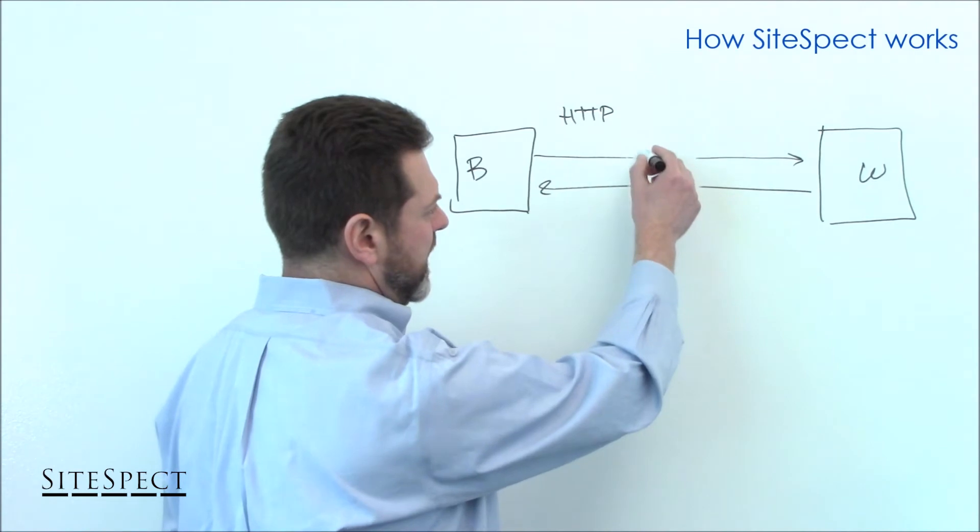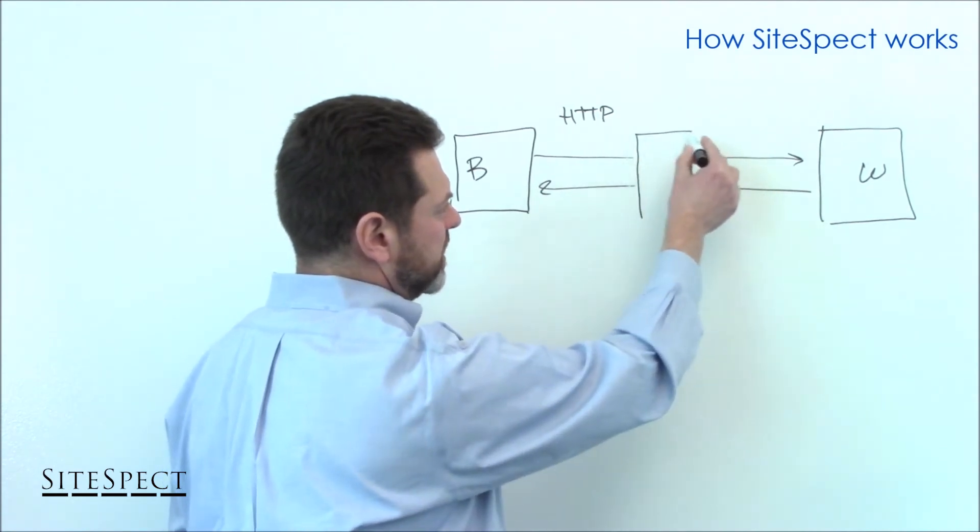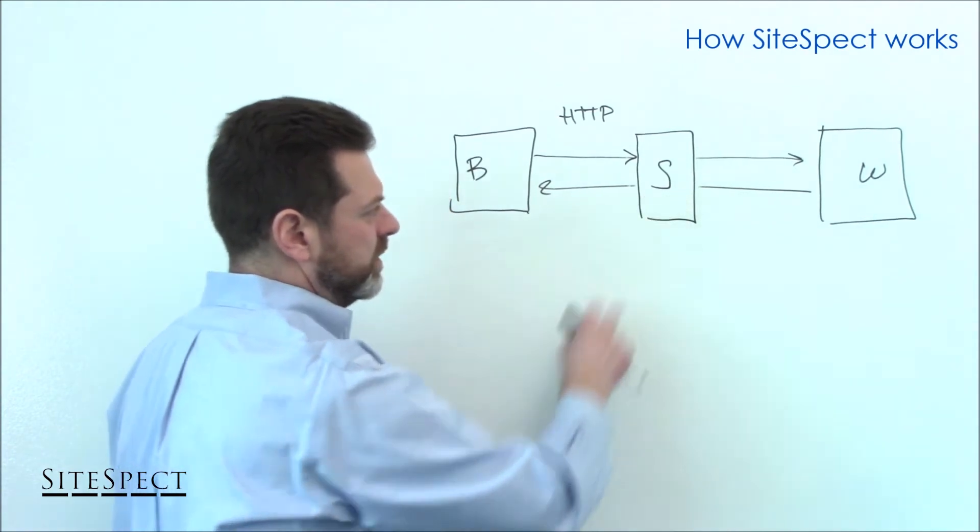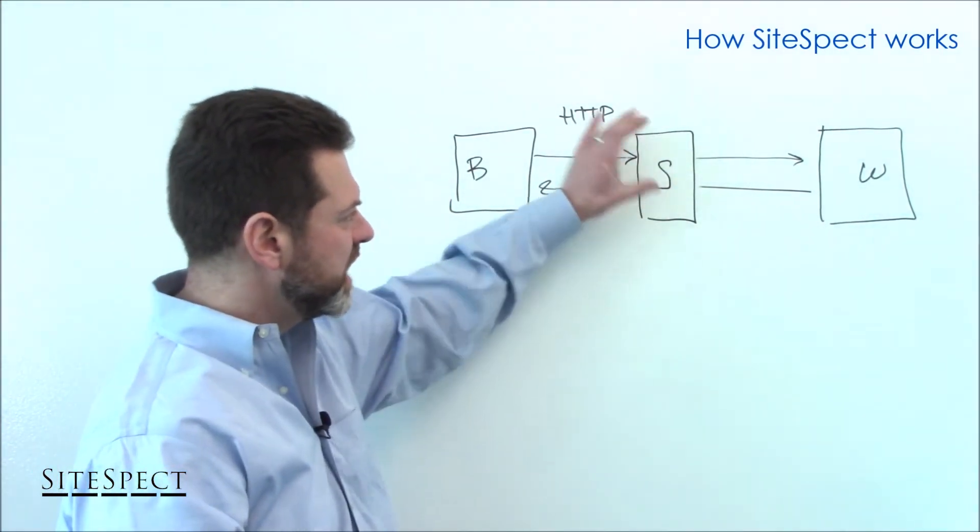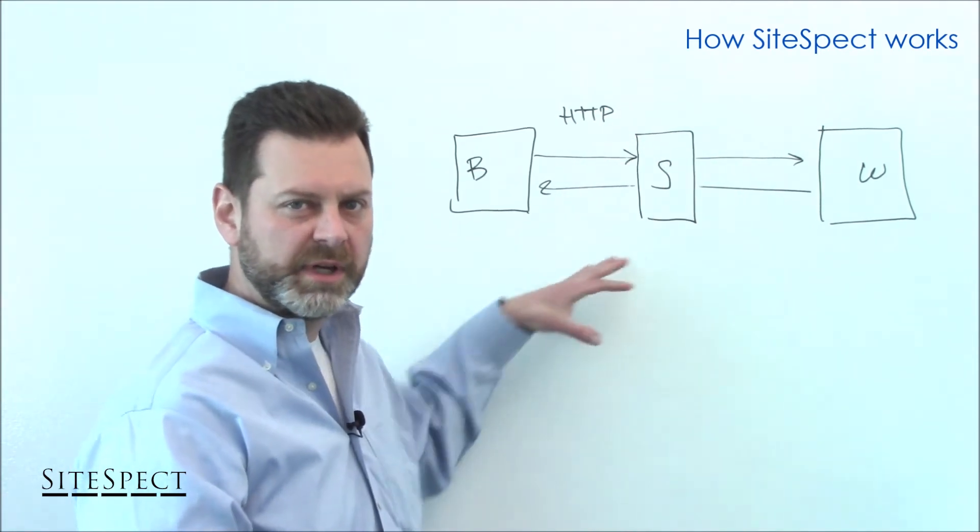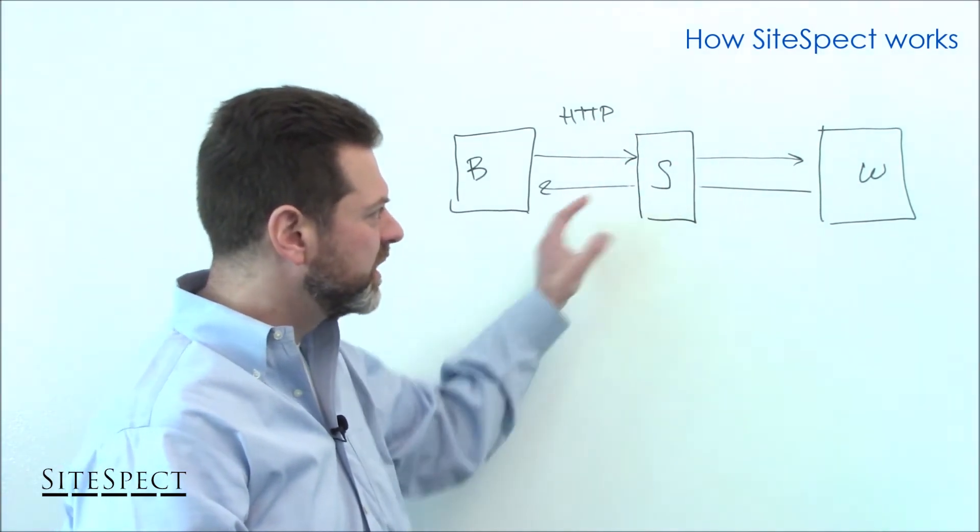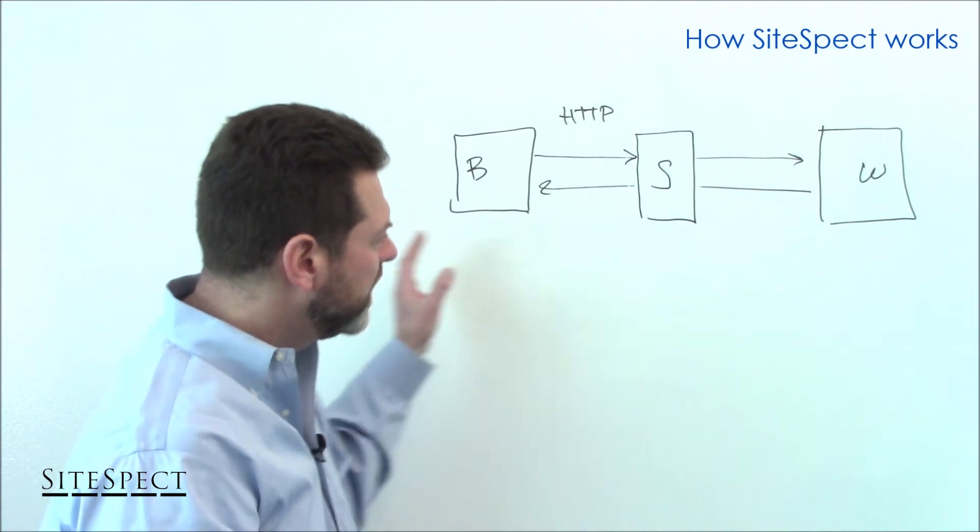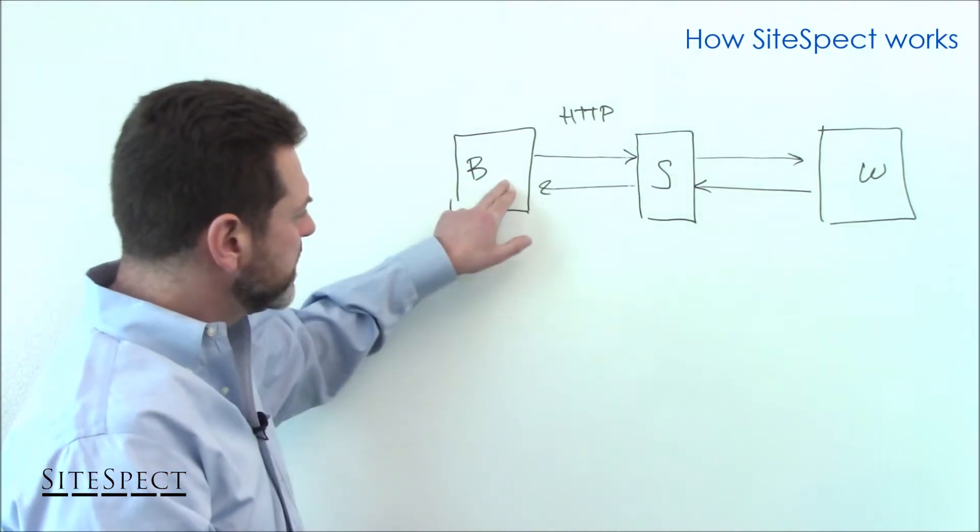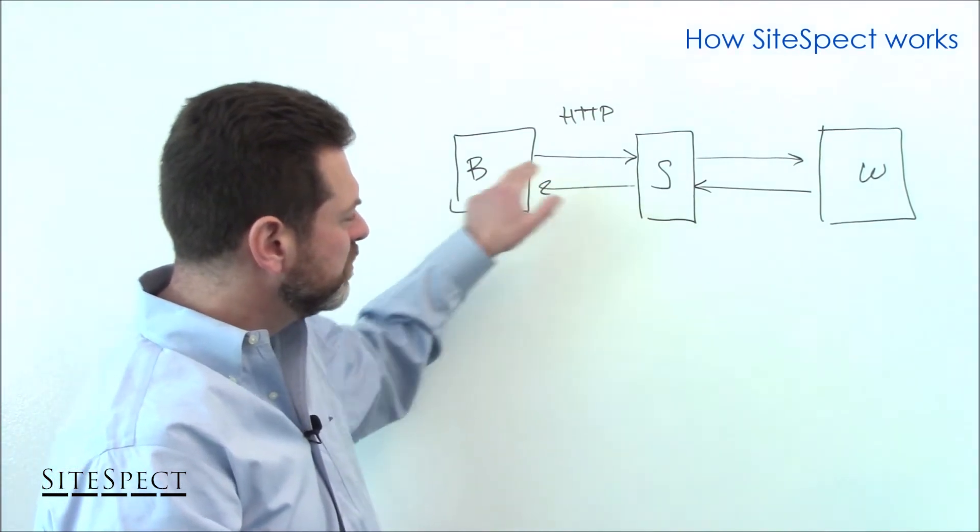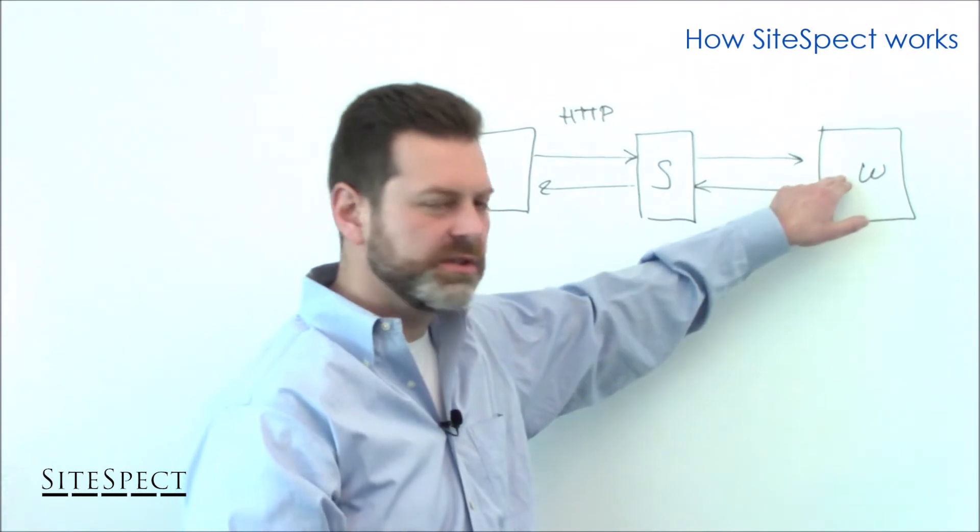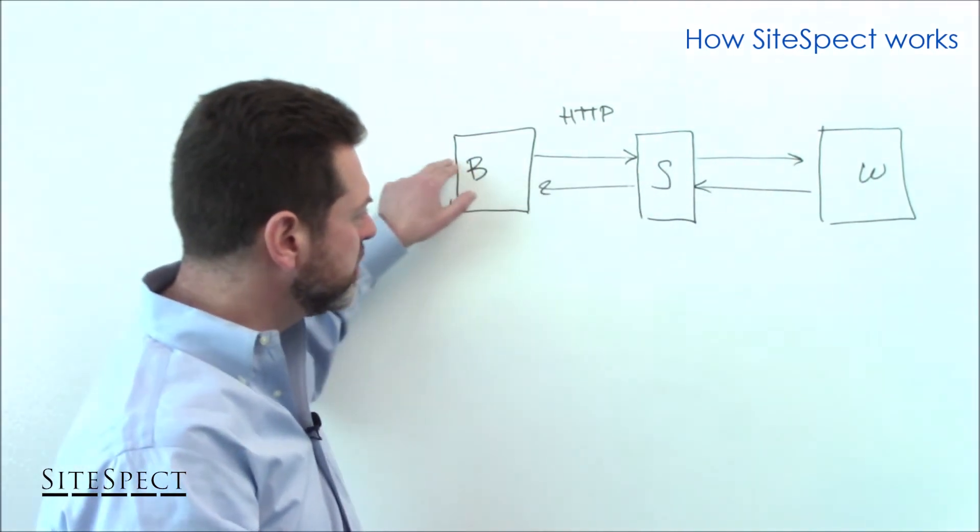So to diagram that out, this is essentially what it looks like. So you've got SiteSpect here. And of course, this is not just a single SiteSpect server sitting somewhere. In another segment of this video series, we'll talk about the SiteSpect infrastructure. But diagrammatically, in the flow of traffic, this is how it works. So the browser makes its request to SiteSpect. SiteSpect proxies that request to the web origin. The response goes back through.